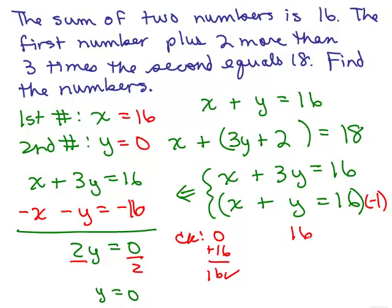What's 3 times the second number? Well, 3 times 0 is 0. And then if I add 2 to 0, I get 2. So I just get 2. When I add that up, I get 18, so it does check.